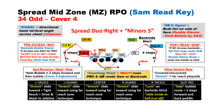With mid-zone RPO, we're going to first do a double glance route where we've got the X and the Z running glances. Both the S and the A do what we call stab bubbles — they take two steps forward to threaten cover four safeties, and then back pedal into the bubble. The line blocks this like outside zone stretch, but the play side tackle and guard now drive that defensive tackle where he wants to go.